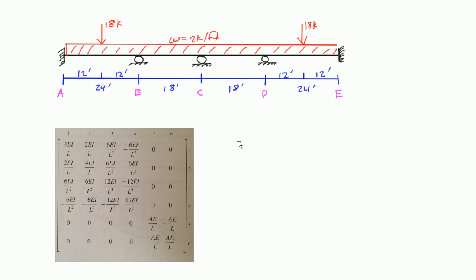The very first thing we do when we start a stiffness method example is we look at the diagram and each part of the elements. Here we have four elements. We have element 1 here, element 2 here, element 3, and element 4. Elements are the spans between joints: element 1 is AB, 2 is BC, 3 is CD, and 4 is DE.